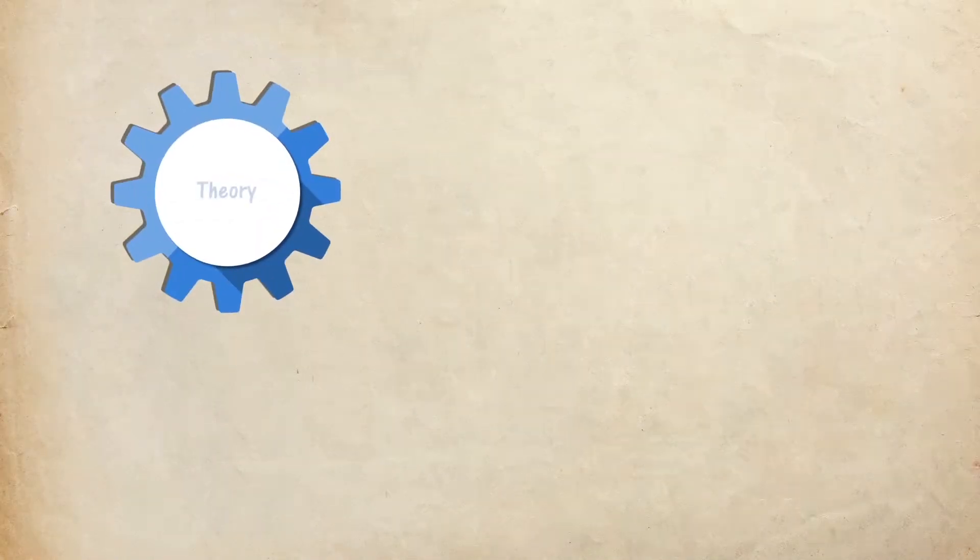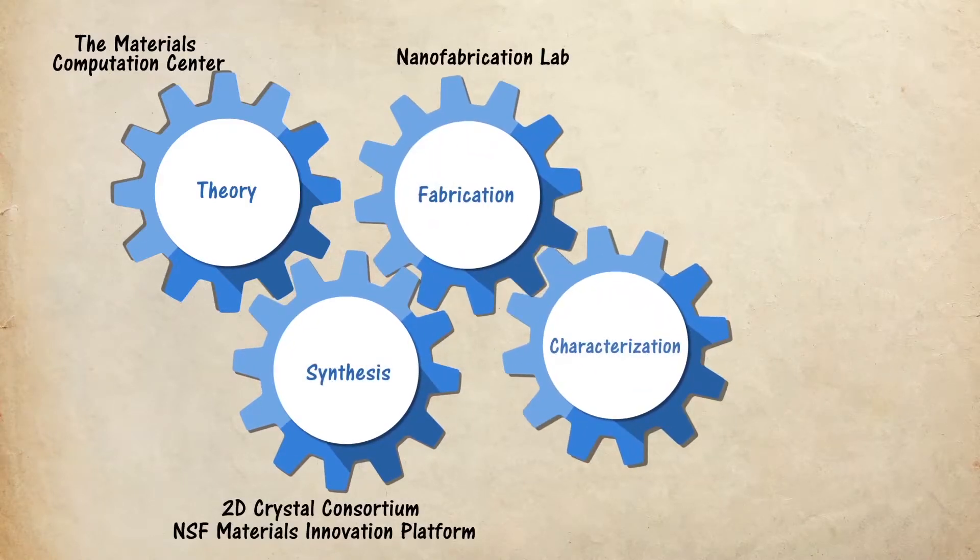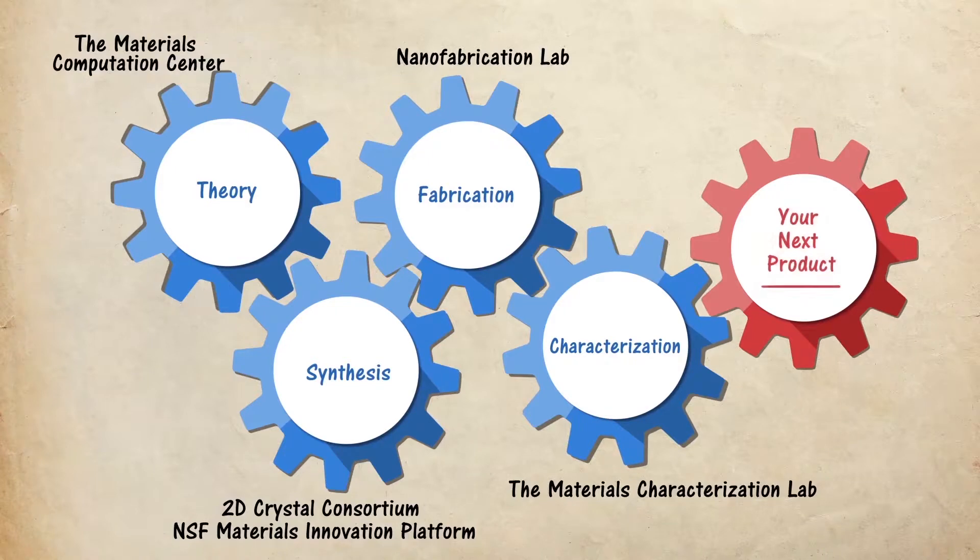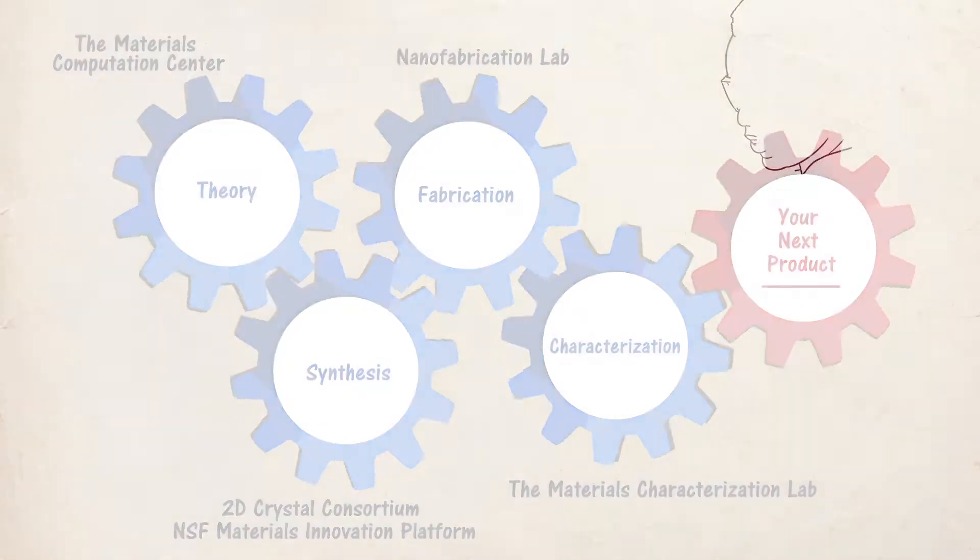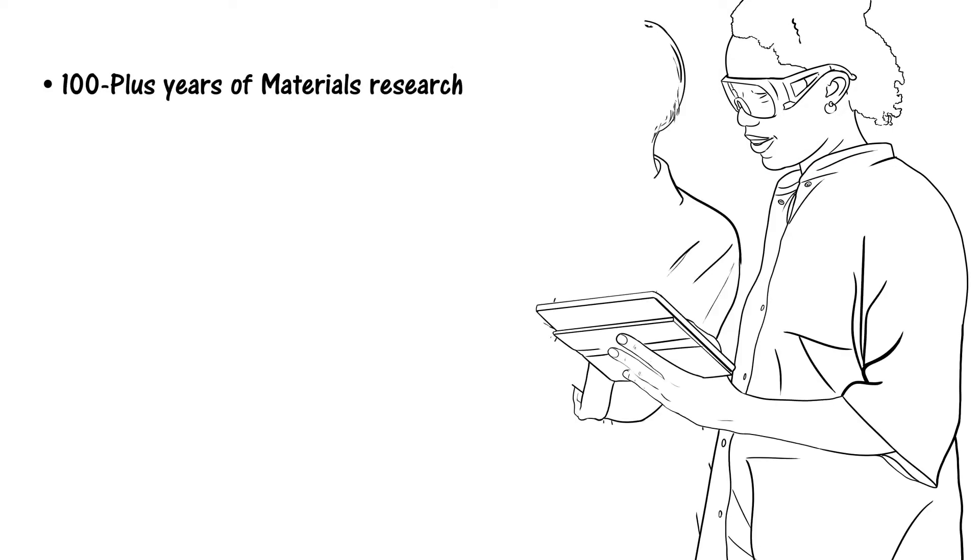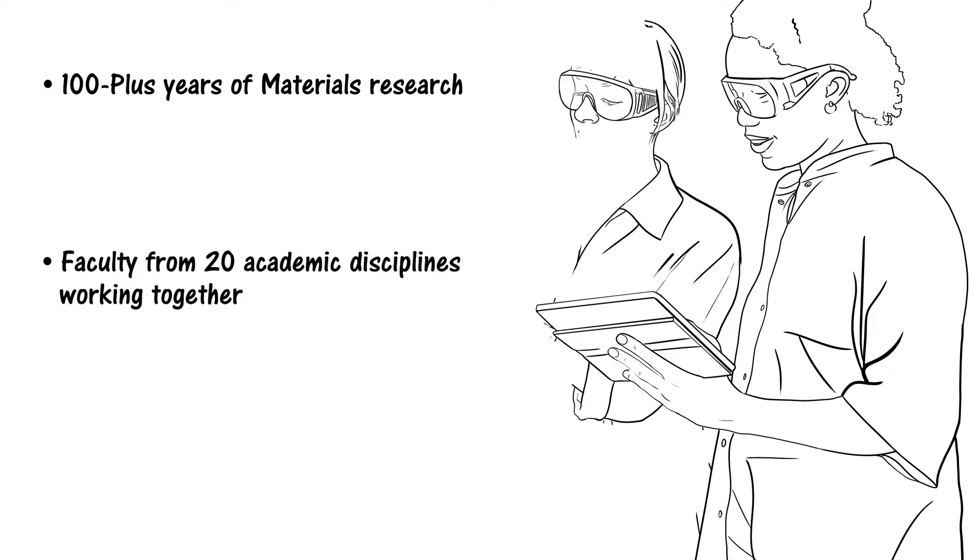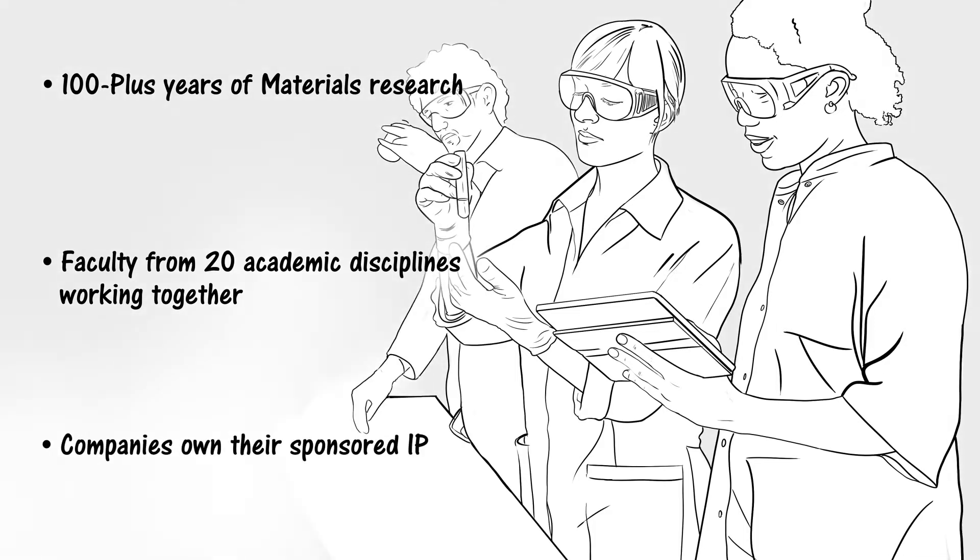Our facilities allow scientists to easily move through the material development cycle, from modeling and synthesis to fabrication and analysis. What sets Penn State apart is over 100 years of research, teaching, and industry collaboration, a true multidisciplinary approach to problem solving, and the most industry-friendly intellectual property policy in all academia.